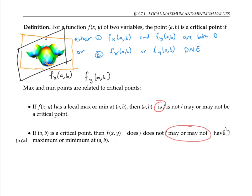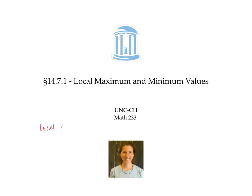Now to see why the second statement is true: notice that critical points for this graph occur not only at this red peak and at these blue valleys where there are local max and mins, but also at this point here — this point is called a saddle point. A saddle point is a place where f sub x and f sub y are both zero, yet there's no local max or min, because the surface curves upwards in one direction and curves downwards in the other. So if you have a critical point, it may not be a local max or min because it might be a saddle point or some other feature. In this video, we saw that local max and min values always occur at critical points, but not all critical points correspond to local max and min values.